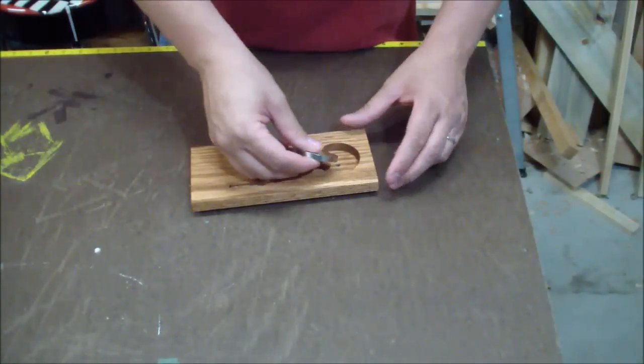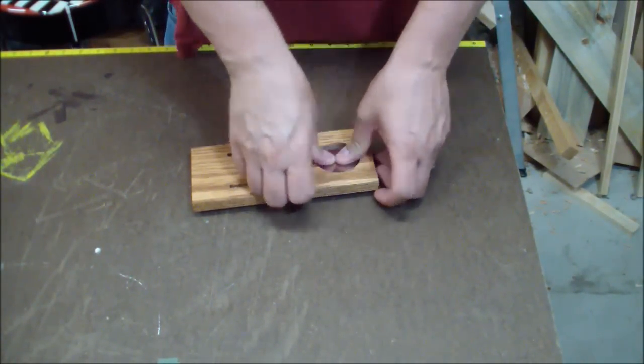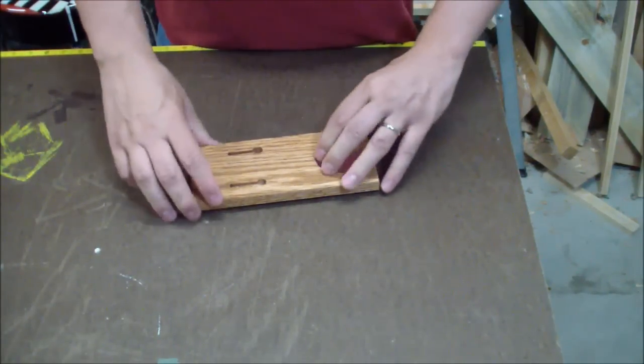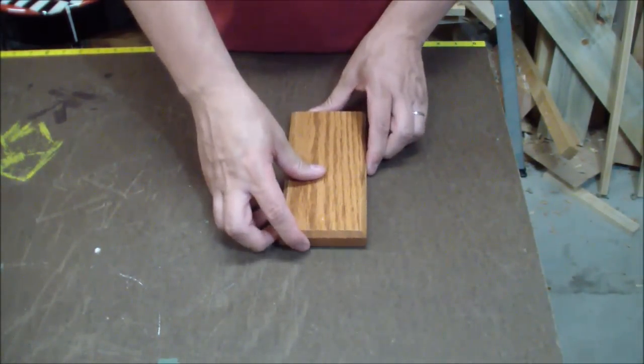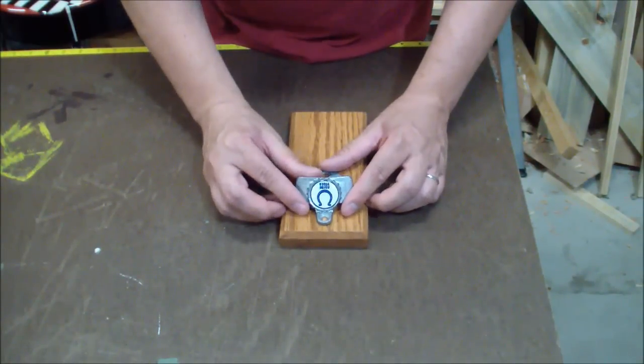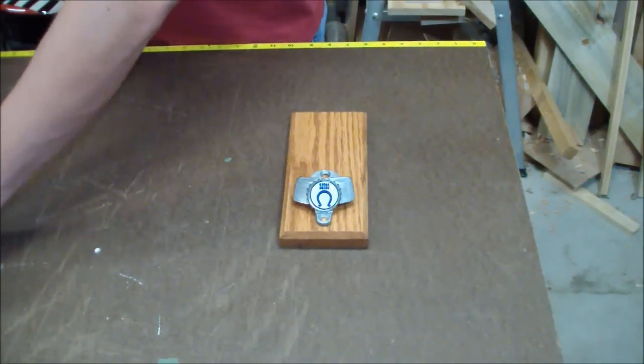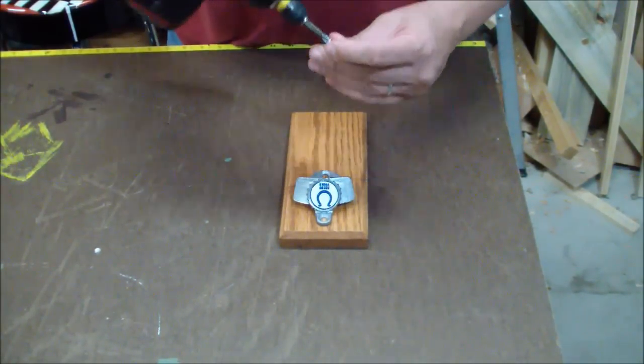After everything dried, I inserted the magnet, and it was a perfect fit. Later I added some epoxy to help hold it in, although I don't know if that was necessary. The last piece is just attaching the bottle opener itself.